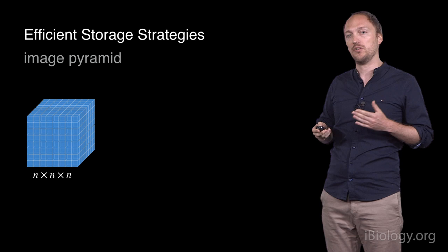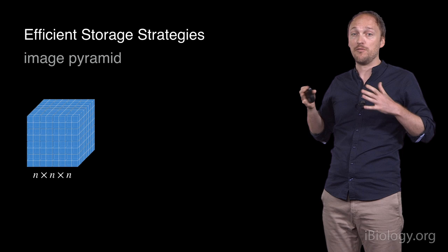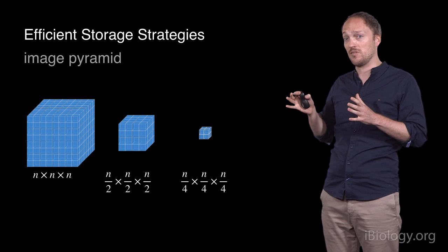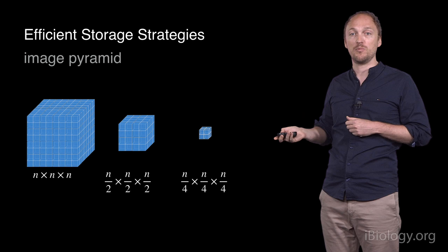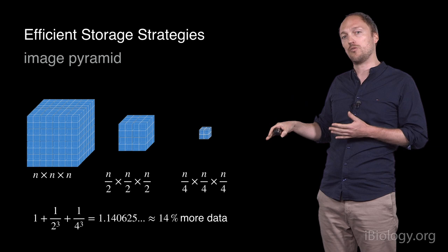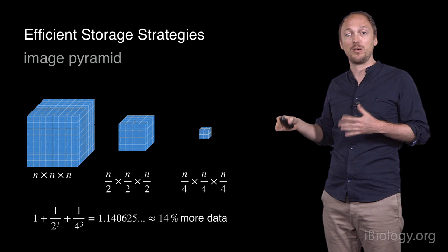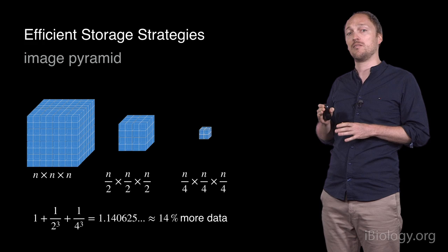Oftentimes, one needs to process or visualize the data at a lower level of detail. Therefore, it is inefficient to have to load every single voxel of a stack. In order to have rapid access to coarser representations of the data, it is often convenient to store downscaled versions of the image along with the full resolution data. Such representations are called image pyramids. The additional data that you need to be stored is quite limited. For example, if we store two lower resolution versions of the data by downscaling by a factor 2 along every dimension, only 14% extra data needs to be stored.